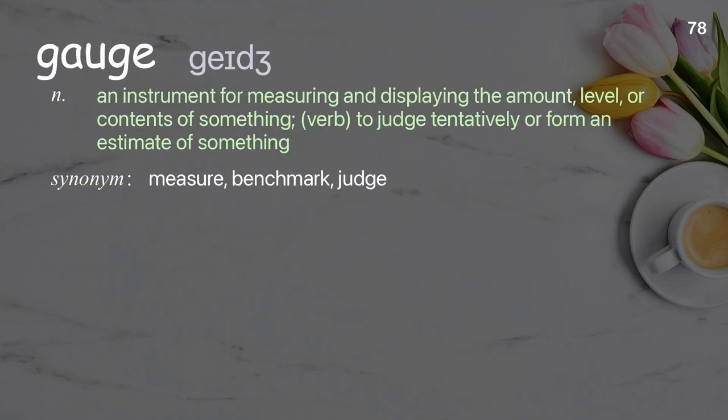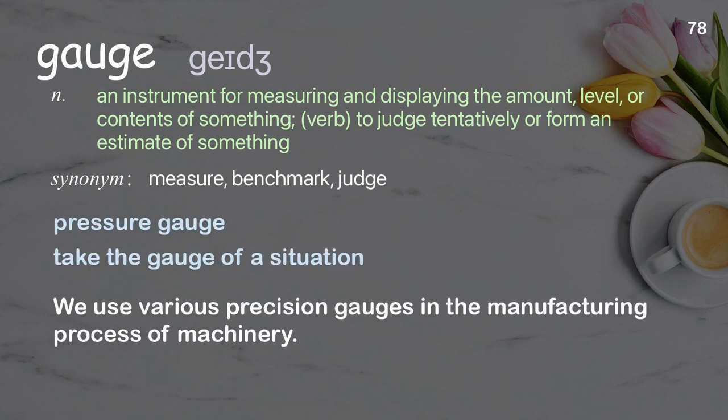Gauge: an instrument for measuring and displaying the amount, level, or contents of something. Verb: to judge tentatively or form an estimate of something. Examples: pressure gauge, take the gauge of a situation. We use various precision gauges in the manufacturing process of machinery.